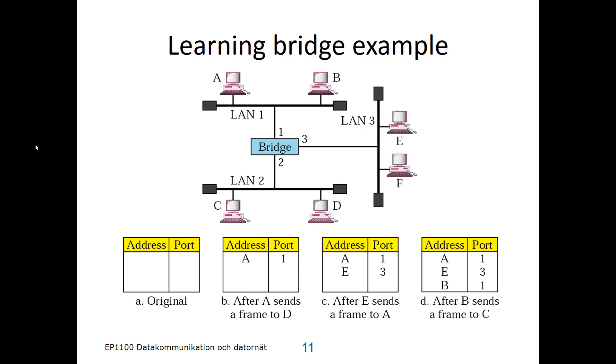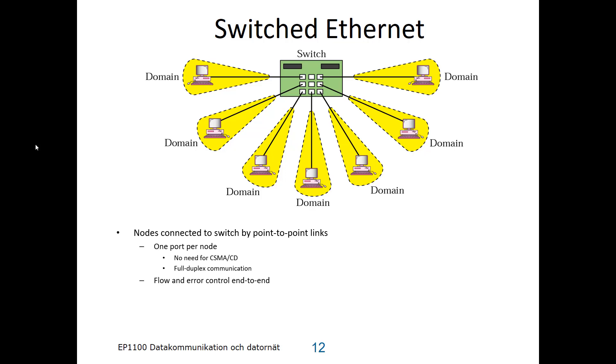Nowadays, wired networks are built as switched networks. We talk about switched Ethernet. That means that nodes are connected to the switch by point-to-point links, so there is no collision domain for a node. There is one port per node, and you don't need CSMA/CD. The ports and the nodes communicate by full-duplex communication, so they can both receive and send at the same time.